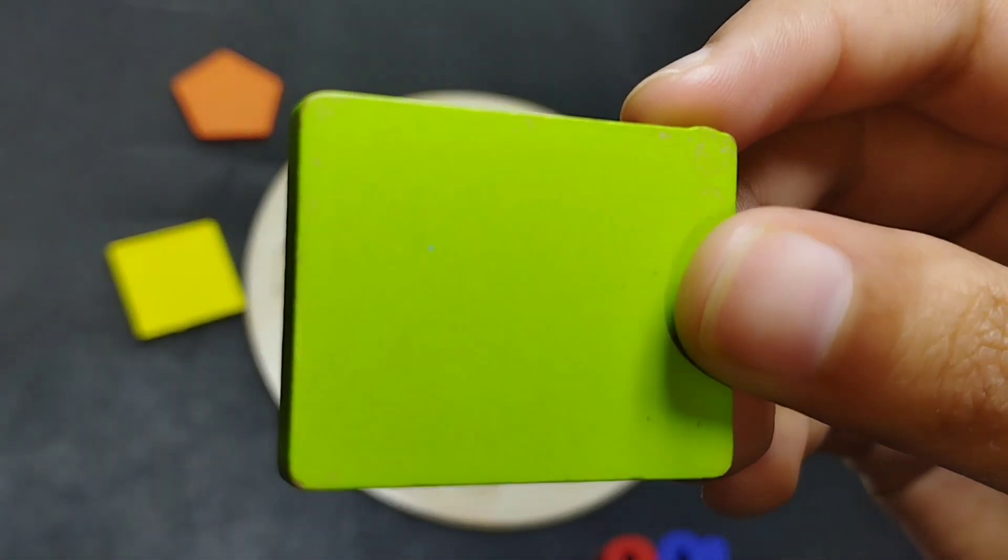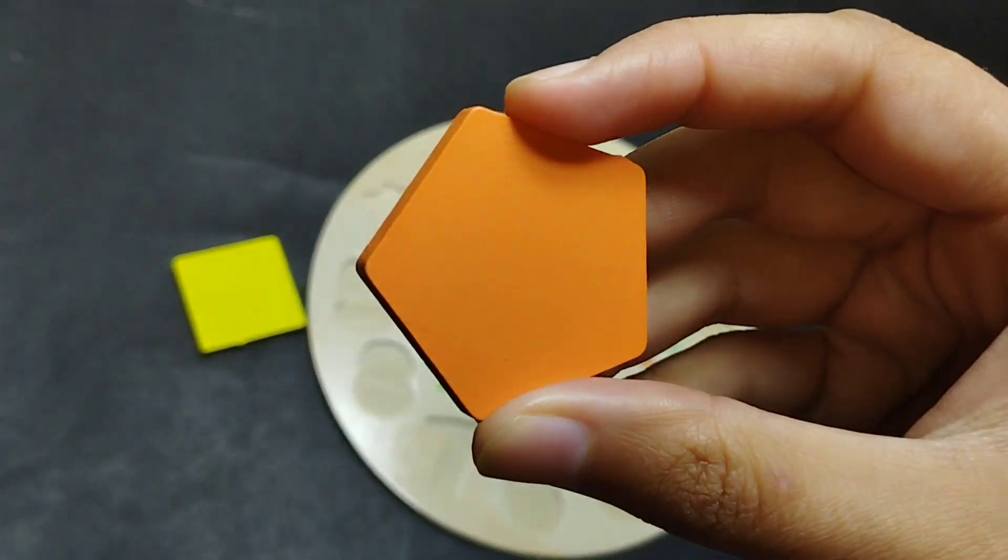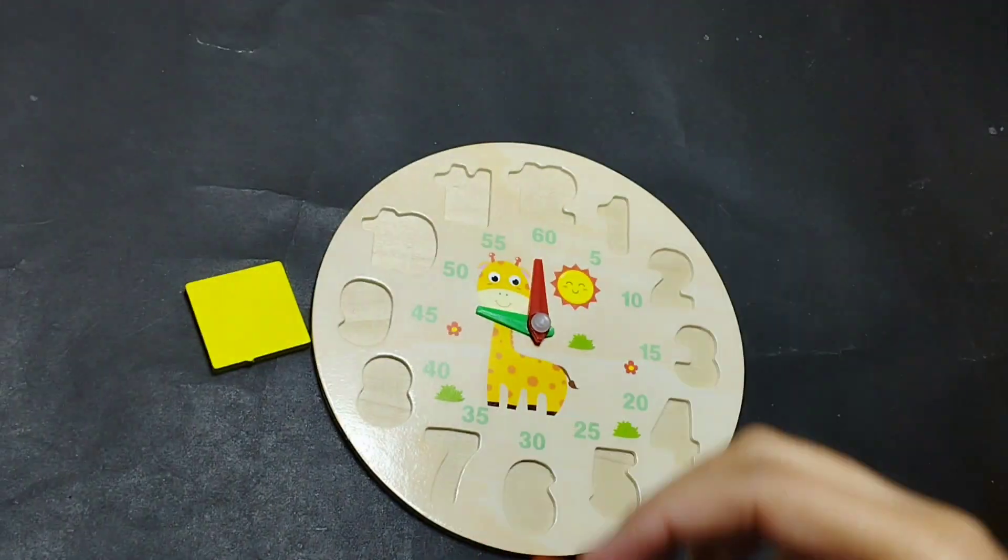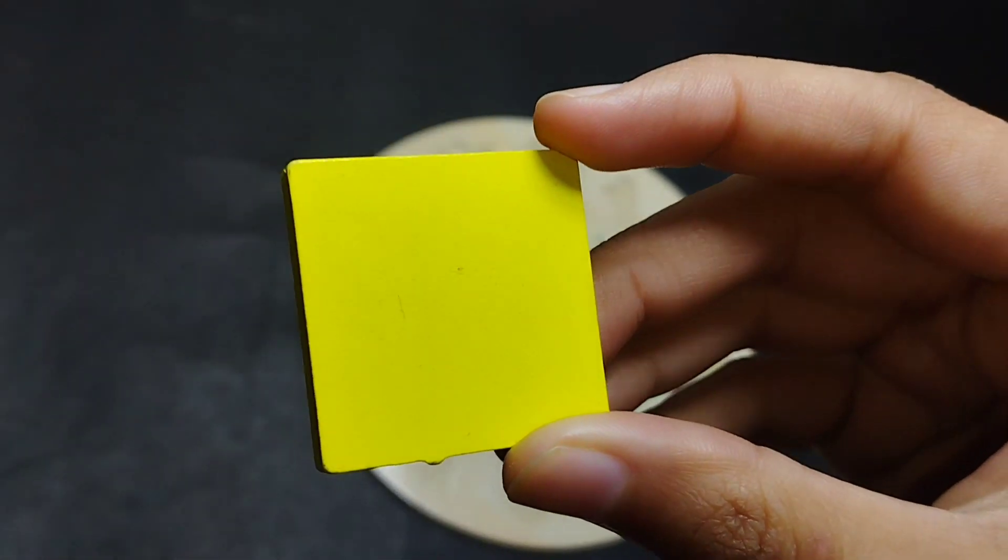Rectangle. This is rectangle shape. This is pentagon, pentagon. This is square, square.